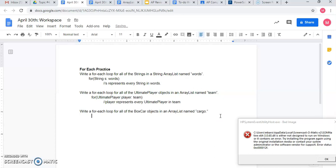Write a for each loop for all of the boxcar objects in an ArrayList named cargo. Boxcar is my type. I'll use car. Cargo is the name of my ArrayList. Now car represents each boxcar item. I've defined a variable that I can now go and use. In this case cargo, car here, player here, and s here. That I can run methods on and it's going to affect all of them.